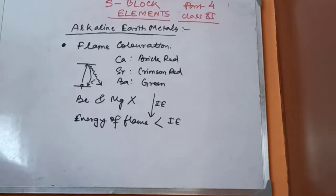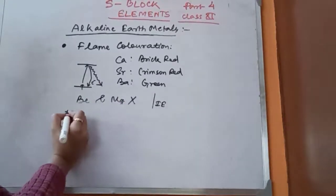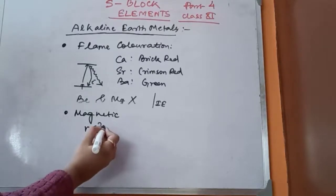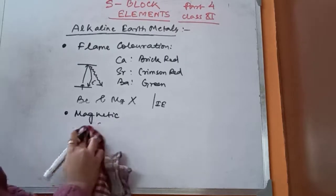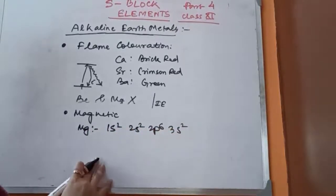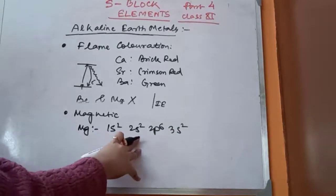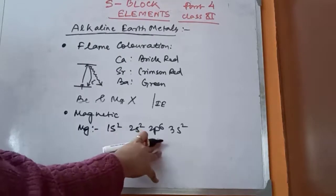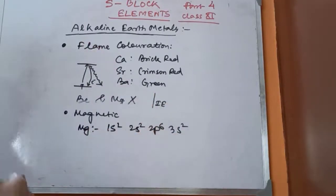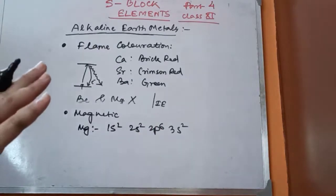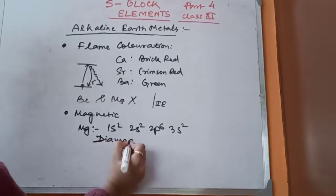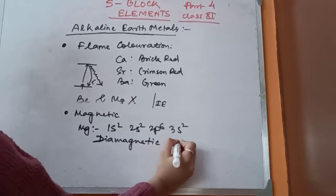The next property is color and magnetic properties. Alkaline earth metals have an outer electronic configuration of ns², meaning all orbitals are completely filled. For example, magnesium: 1s² 2s² 2p⁶ 3s². All orbitals are completely filled, all electrons are paired, and there is an absence of unpaired electrons. So all alkaline earth metals are diamagnetic and hence colorless.